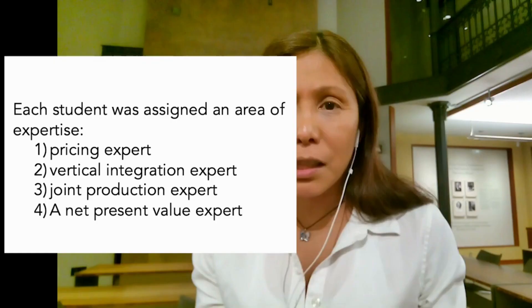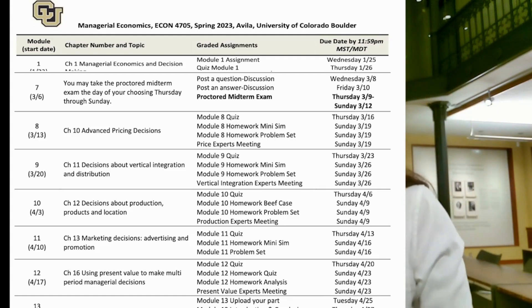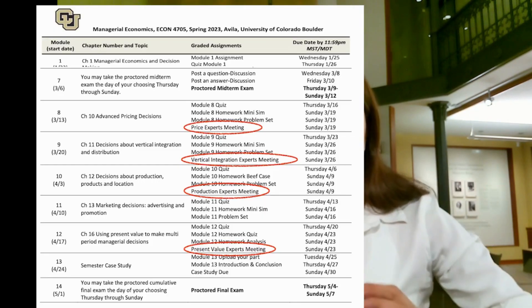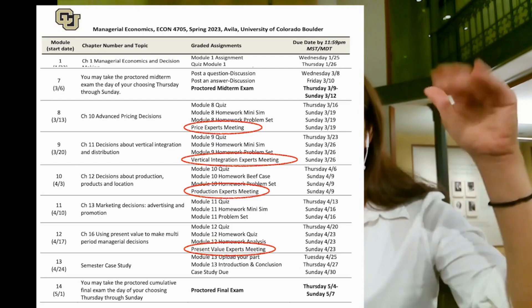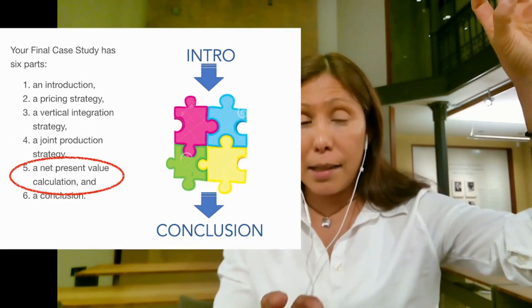Each student was assigned an area of expertise. There would be a pricing expert, a vertical integration expert, a joint production expert, and a net present value expert. In terms of timing, I begin the group project after the midterm. By then, I already have grades and I also know my students a bit better. Think about an athletic team: the weakest students are in the middle, the strongest student finishes, and the medium student begins. This way, I have a high probability of having at least a pricing strategy and a net present value analysis of such strategy.